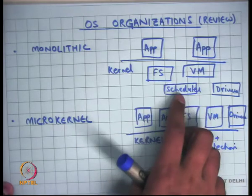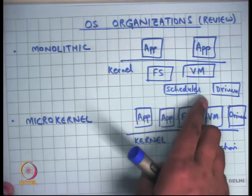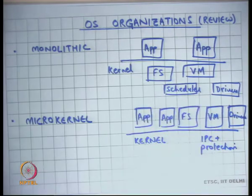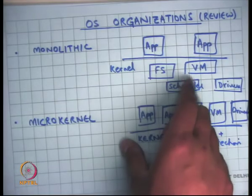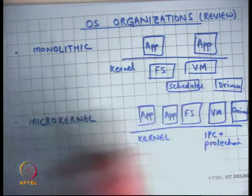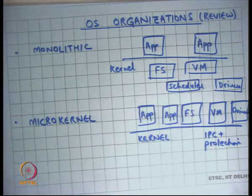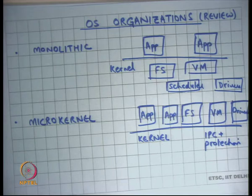The file system, virtual memory, scheduler, and drivers all live in one common address space called the kernel. These different modules export system call APIs like read, write, open, close, mmap, page fault, etcetera. These are all abstractions that these things provide.